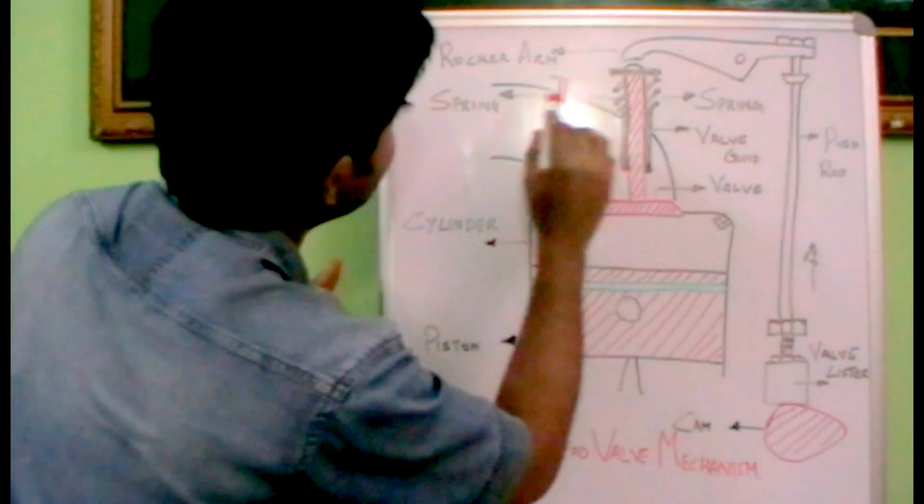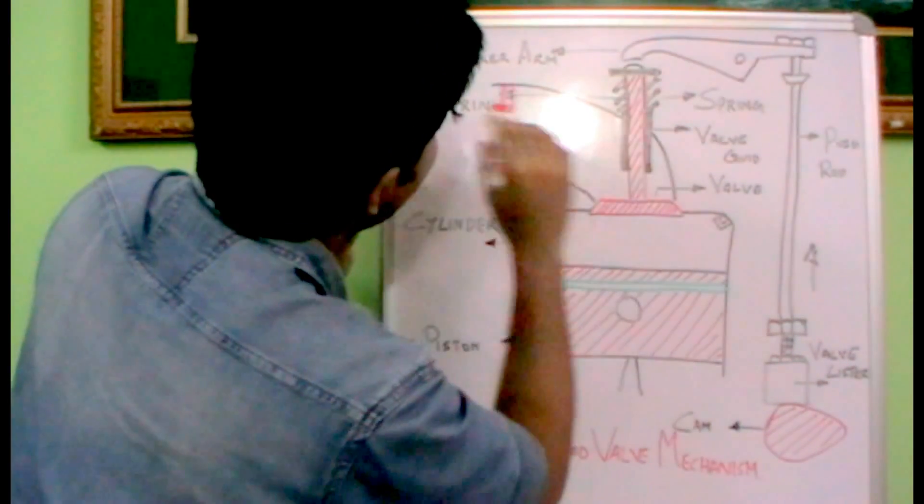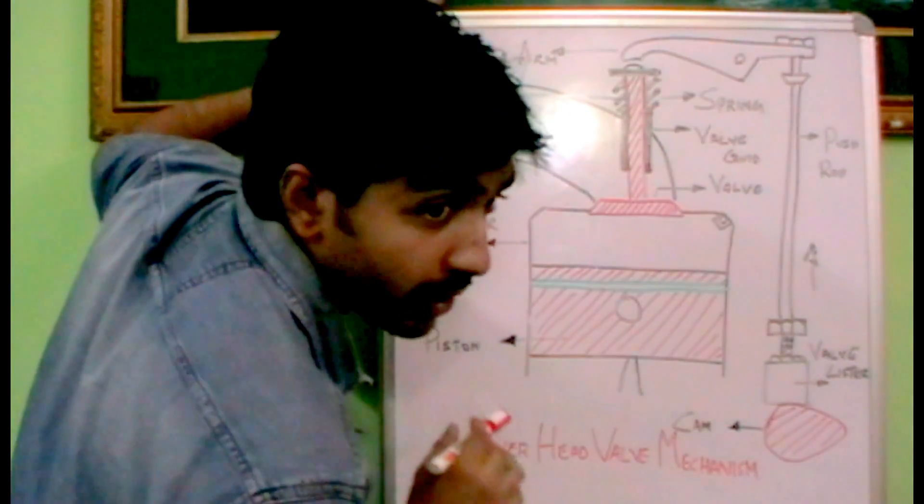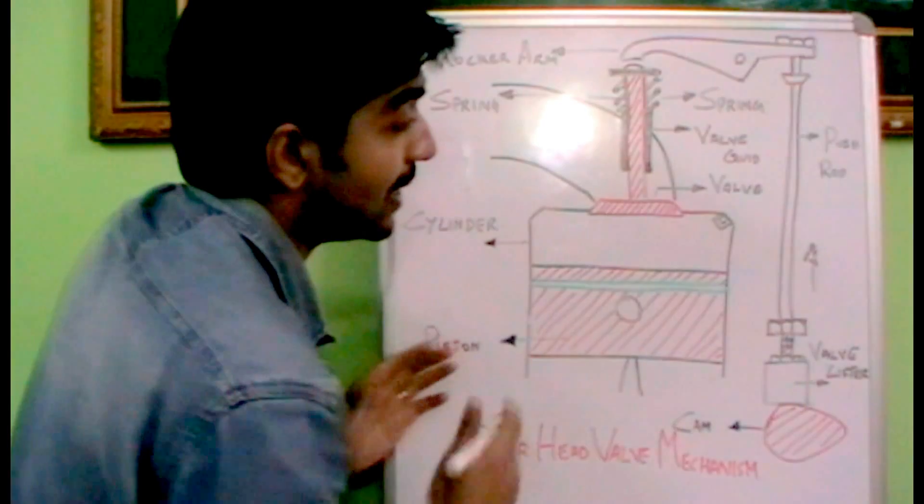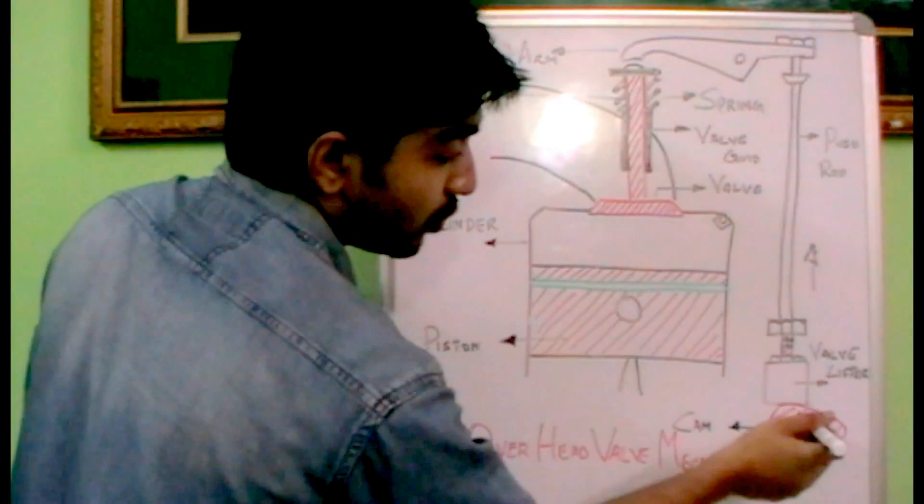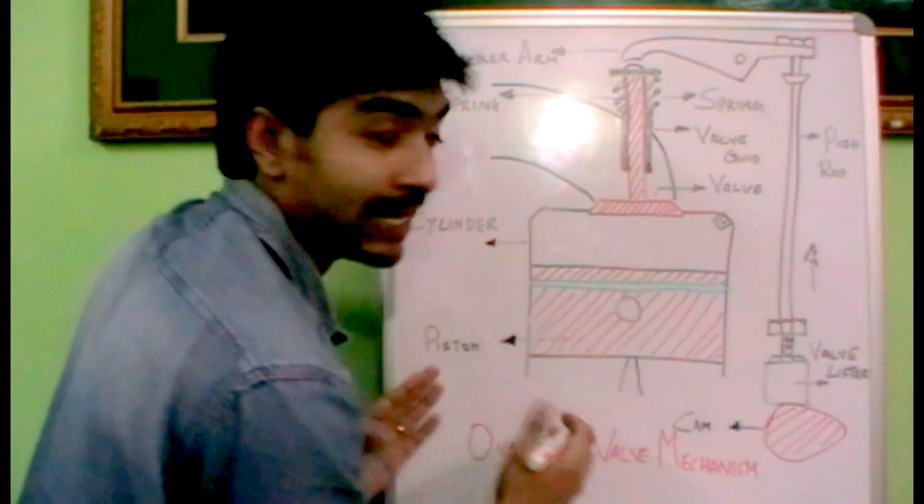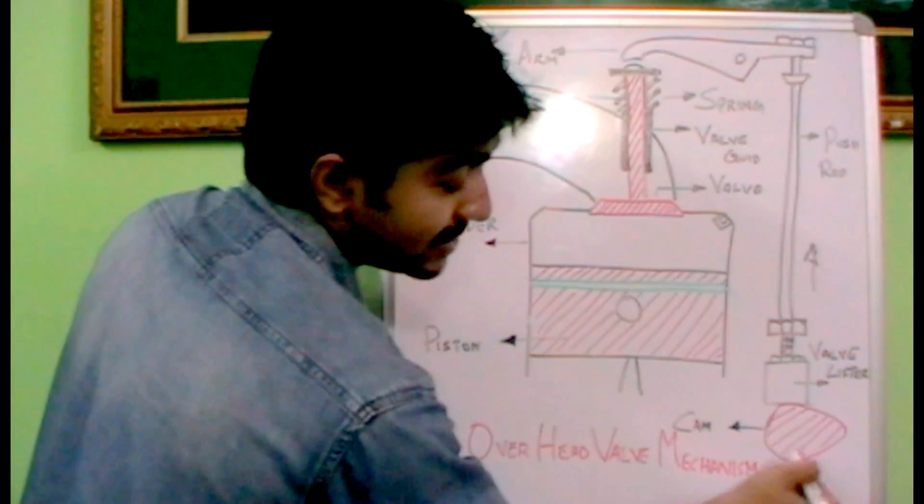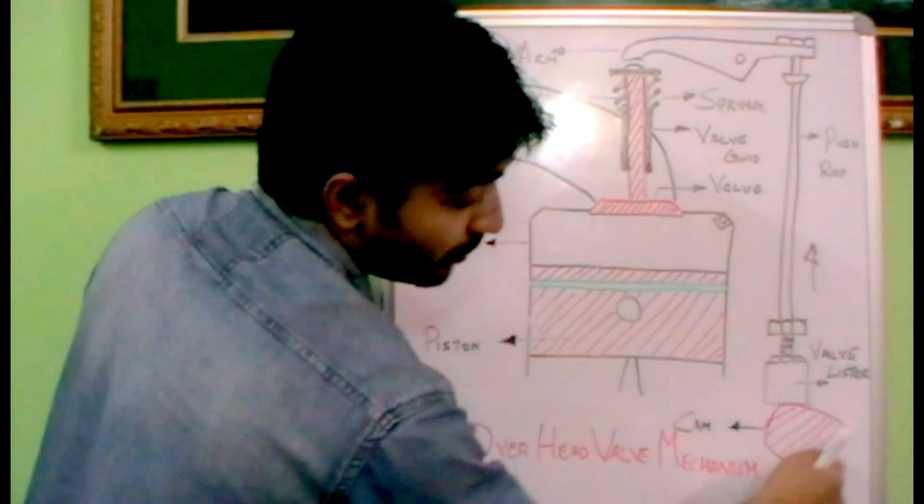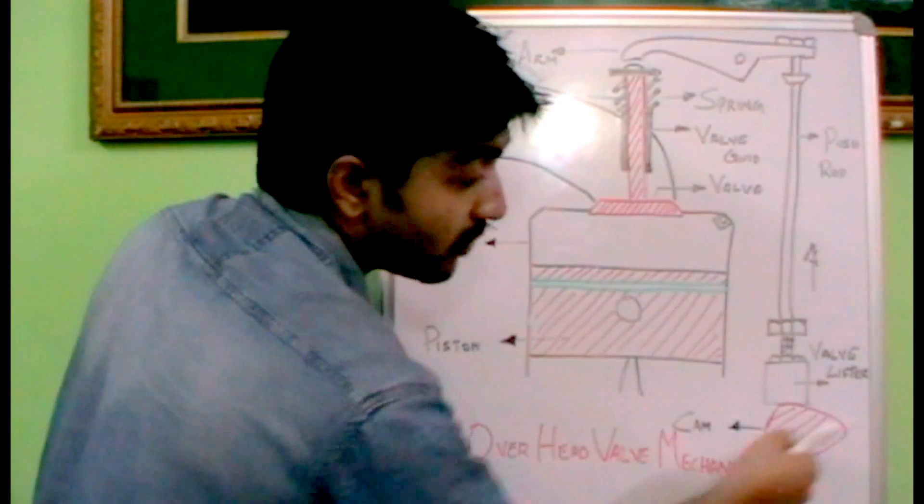So the valve is connected, will move as per the movement of this rocker arm. So how the rocker arm moves, let's see. So we have a camshaft over here which has a number of cams according to the number of cylinders. We have one cam over here and see the profile of the cam. It is in the shape of an egg or it is an oval shape.